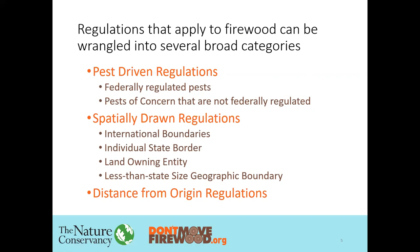Spatially drawn regulations are drawn on edges — for instance, the borders between two countries, the Canadian-U.S. border, the edges of a state declaring an external quarantine to prevent the entry of pests, some other land-owning entities like a state parks authority or a national park, or a less-than-state geographic boundary which is the area of a state that is protected when there's a very limited infestation. The third group is a distance-from-origin regulation — those are regulations that say you cannot move firewood farther than a given number of miles or kilometers from where it was initially harvested or processed.